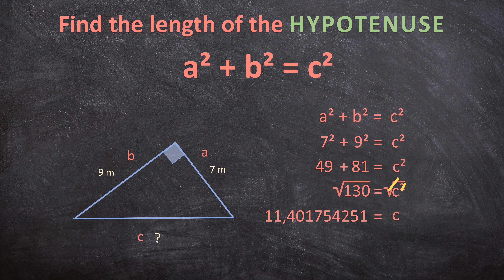We're not going to leave it as a long decimal. If a question doesn't specify how to round, you always round to the nearest hundredths — the second decimal place. So C is 11.40, which is 11.4 meters. The zero after 11.4 doesn't add or remove any value, so you can leave it out. Our hypotenuse is 11.4 meters.